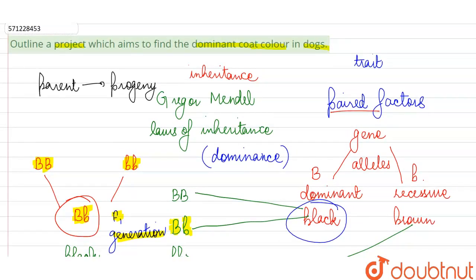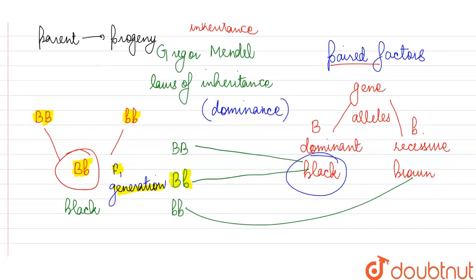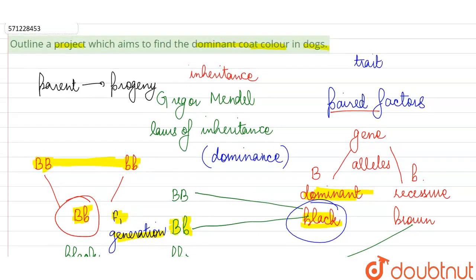By such a simple experiment, we can determine that the dominant coat color is going to be which one? Which is appearing in the F1 generation, because the dominant allele is going to express itself no matter what. So the dominant one is the gene which appears in the F1 generation after we conduct a cross between these two.